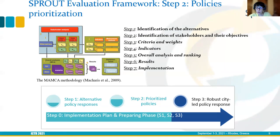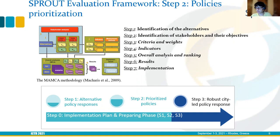For this prioritization, we have considered the multi-actor multi-criteria analysis from Macharis, following seven steps. The first steps come from the previous methodological pipeline step. It is very important that the relevant stakeholders participate in this MAMCA assessment. The result of this analysis will be the prioritized list of policy responses.